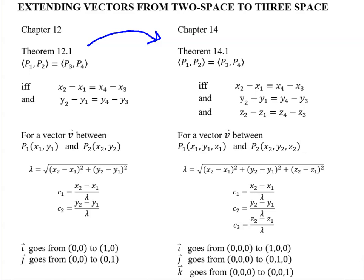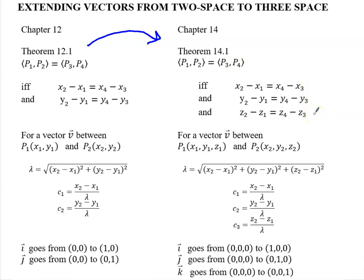For example, the way that we write a vector in two-space — like if I want to talk about two equivalent vectors, the change in x's have to be the same and the change in y's have to be the same. If I extend that to 3D, same thing is true, except now we have a change in x, a change in y, and a change in z. If we want to talk about a vector between two points,